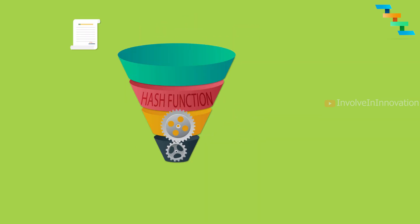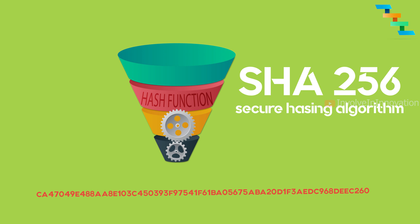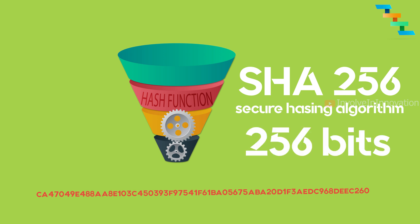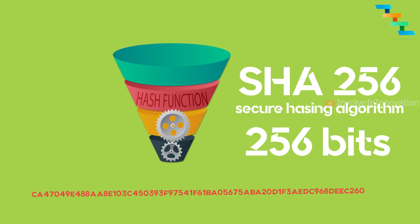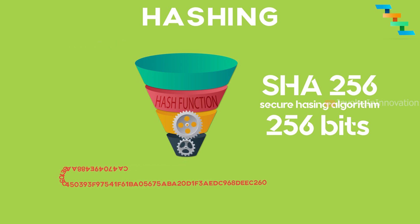The transactions are sent through the hash function which returns a fixed length string. In Bitcoin we use SHA256, which is the Secure Hashing Algorithm 256. SHA256 always returns a 256-bit long output, which is 64 characters. For example, here we pass a text message as a string input to the hash function, and it returns a 64-character length string as output.